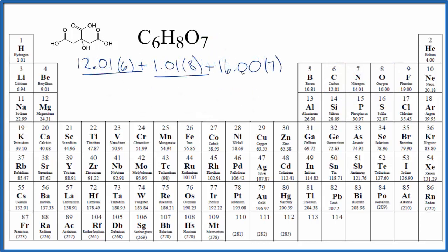So we multiply these numbers together and then add them up. We get 192.14. And the units are grams per mole. Those are the units for molar mass.